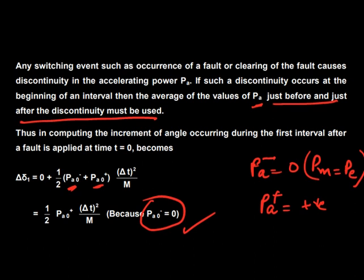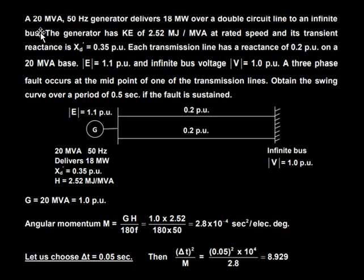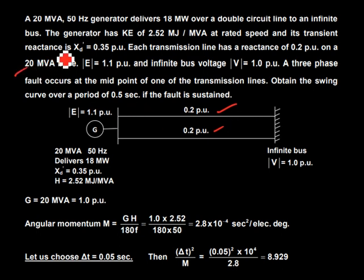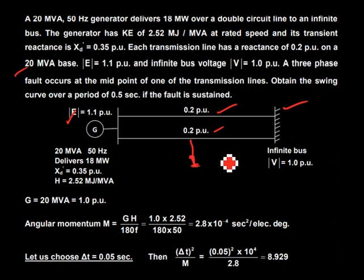Now let's take up an example to understand this. A 20 MVA, 50 Hz generator is delivering 18 MW over a double-circuit line to an infinite bus. The generator has a kinetic energy of 2.52 MJ/MVA and a transient reactance of 0.35 per unit. Each transmission line has 0.2 per unit reactance on a 20 MVA base. The generator terminal voltage is 1.1 per unit and the infinite bus voltage is 1.0 per unit. A three-phase fault occurs at the middle of one of the transmission lines.